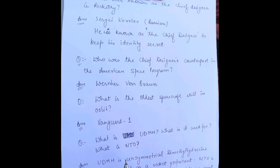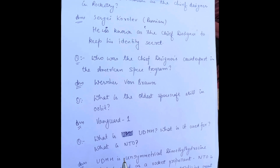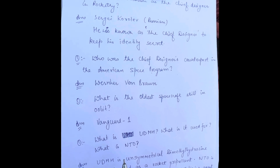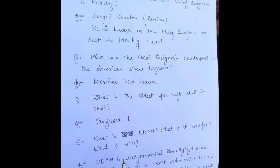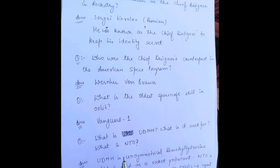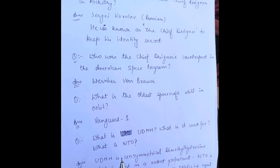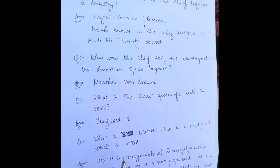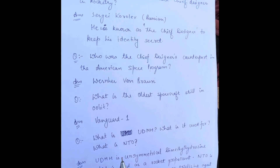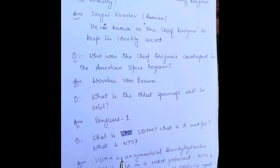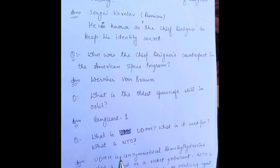The first question: who was known as the chief designer in rocketry? Sergey Korolev, a Russian man, was known as the chief designer. He was given this name to keep his identity secret. Who was the chief designer counterpart in the American space program? Just like Sergey Korolev, Wernher von Braun was the chief designer for the American space program.